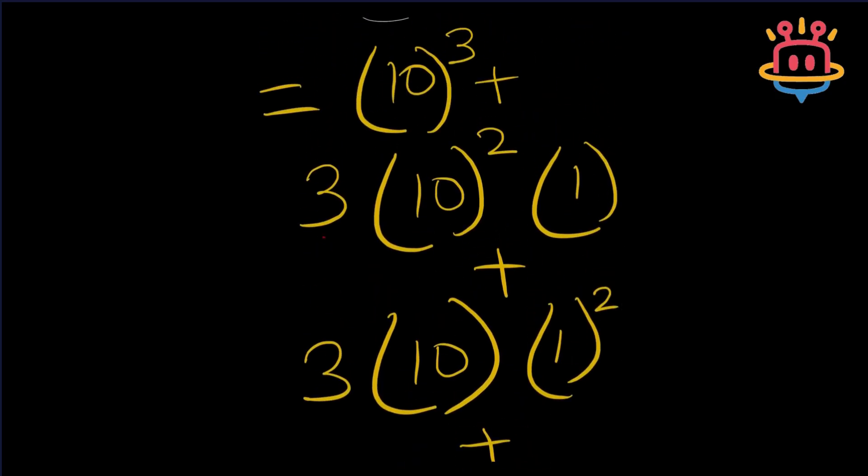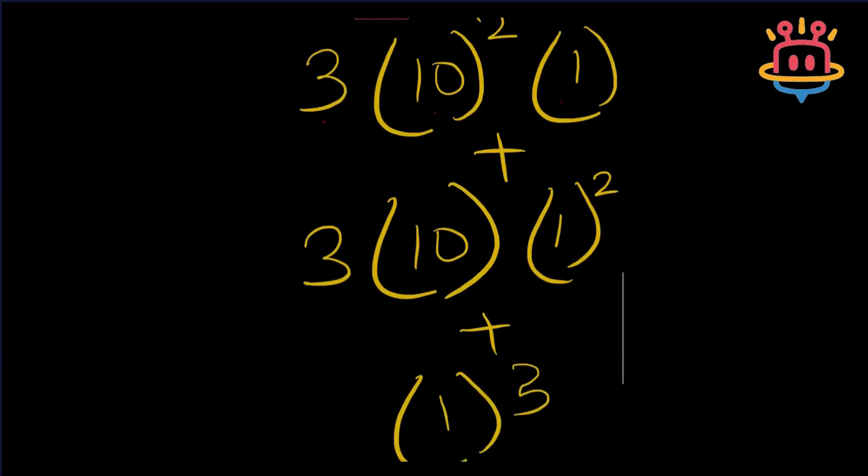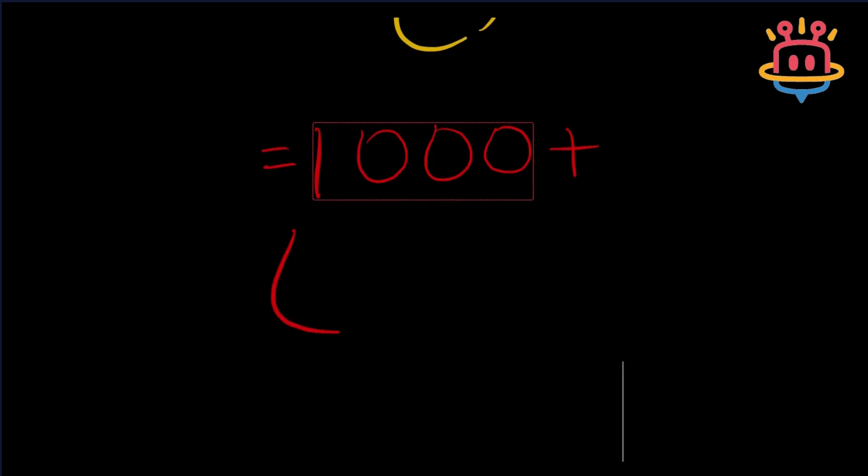3 multiplied by square of 10 multiplied by 1. So we can write it like this: square of 10 would simply be 1 and 2 zeros, and finally we had 1.